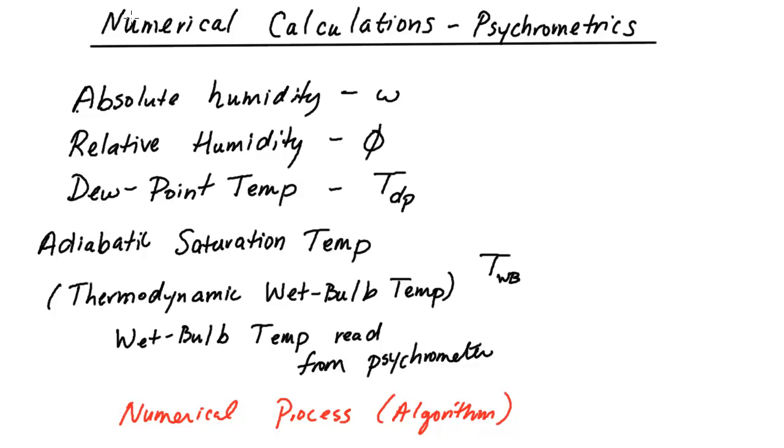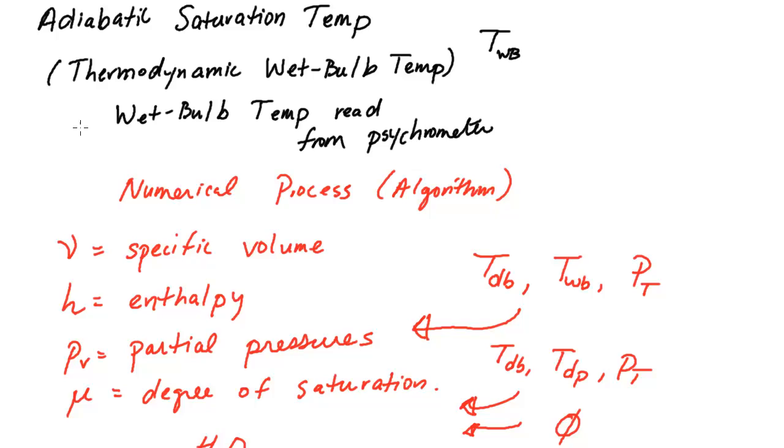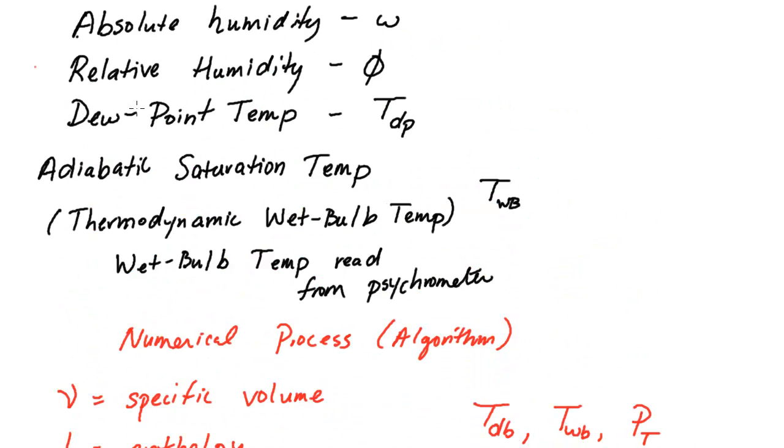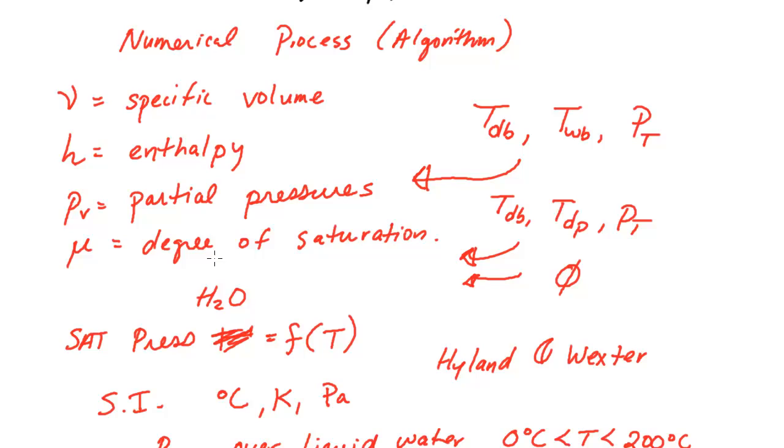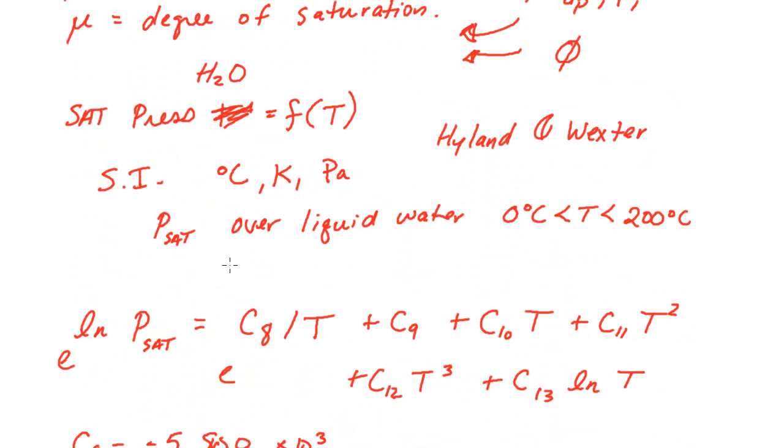In the last video, we started our discussion about numerical calculations for psychrometrics, and we have this whole list of parameters that we are interested in, including humidity-related things and temperatures, specific volume, partial pressures, and degree of saturation.